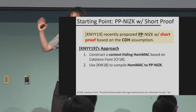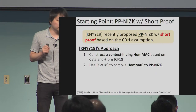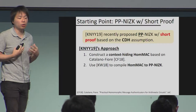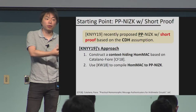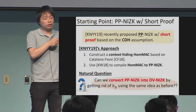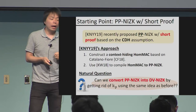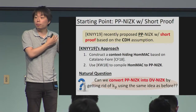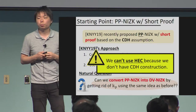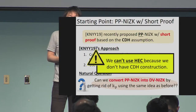The starting point is the preprocessing NIZK we constructed at EuroCrypt this year, and we want to get rid of the prover key. In the previous work, we constructed a context-hiding homomorphic MAC, and using the Kimura compiler compiled it into a preprocessing NIZK. The natural question: can we bootstrap this preprocessing NIZK into a DV NIZK by eliminating the prover's secret information? We can't simply reuse the homomorphic equivocal commitment because we don't have that from CDH. So we had to take a different approach.